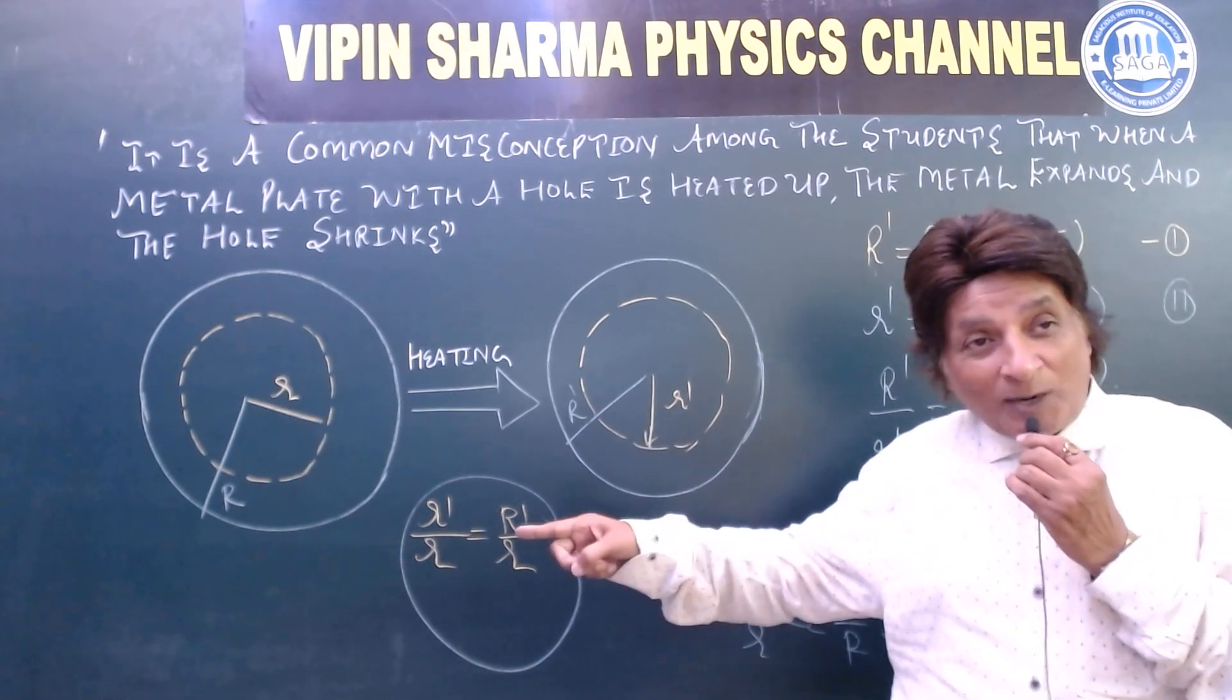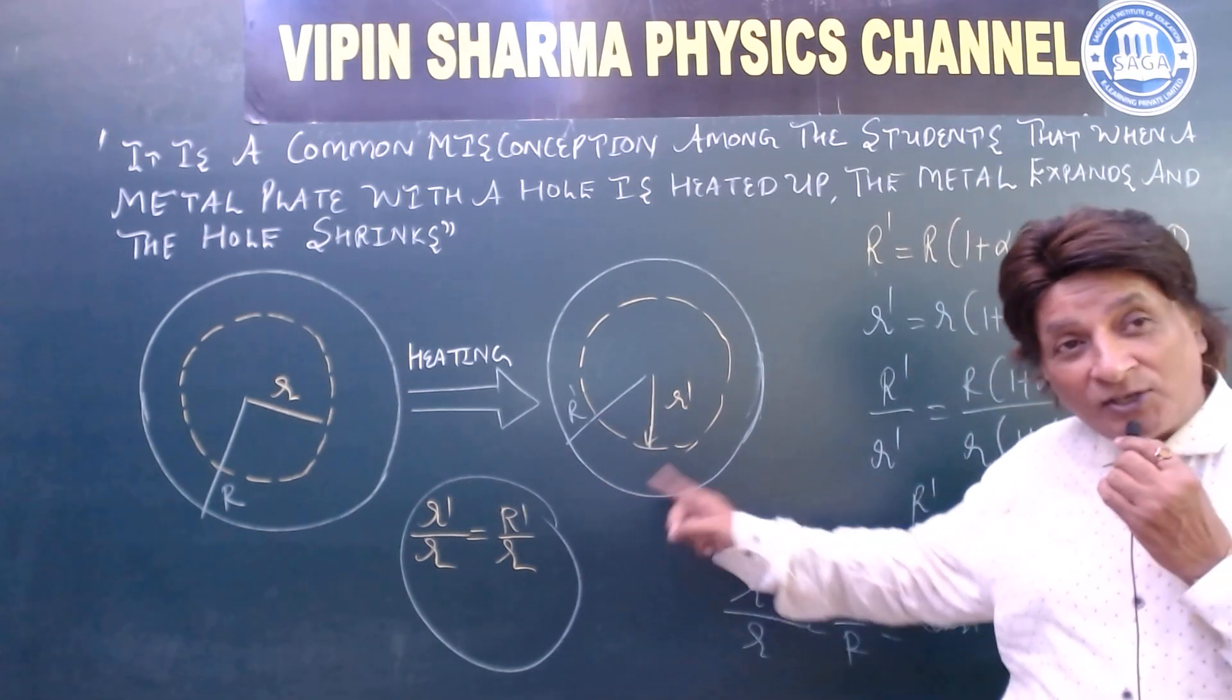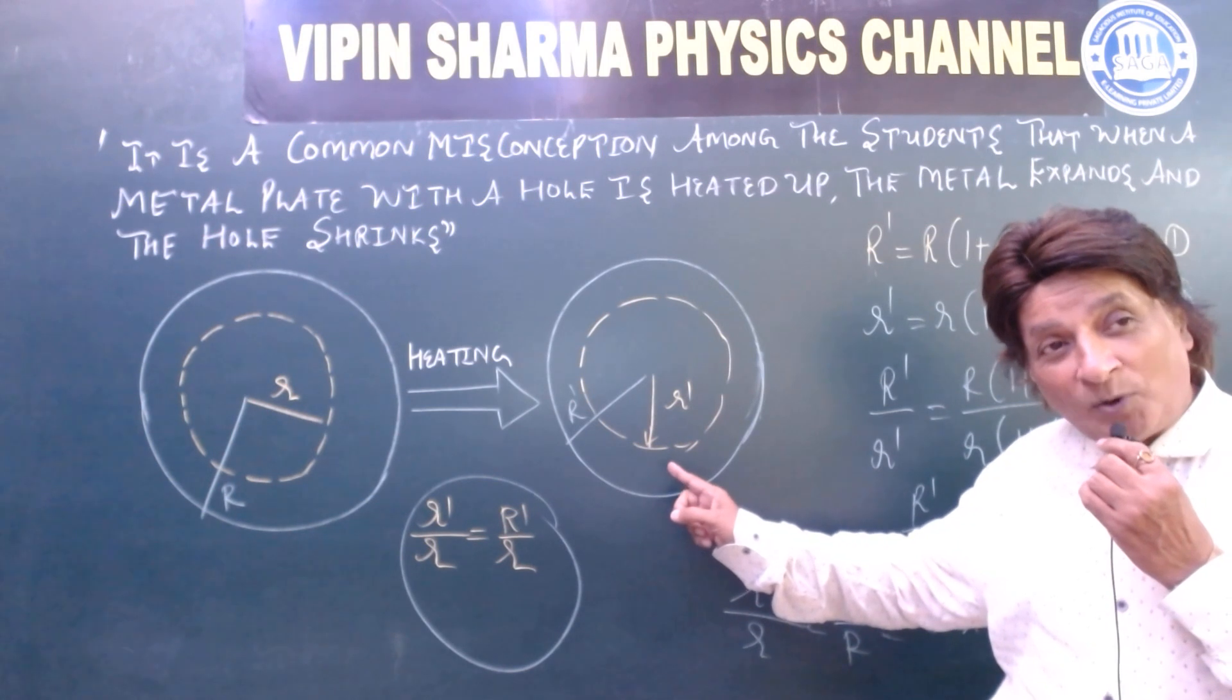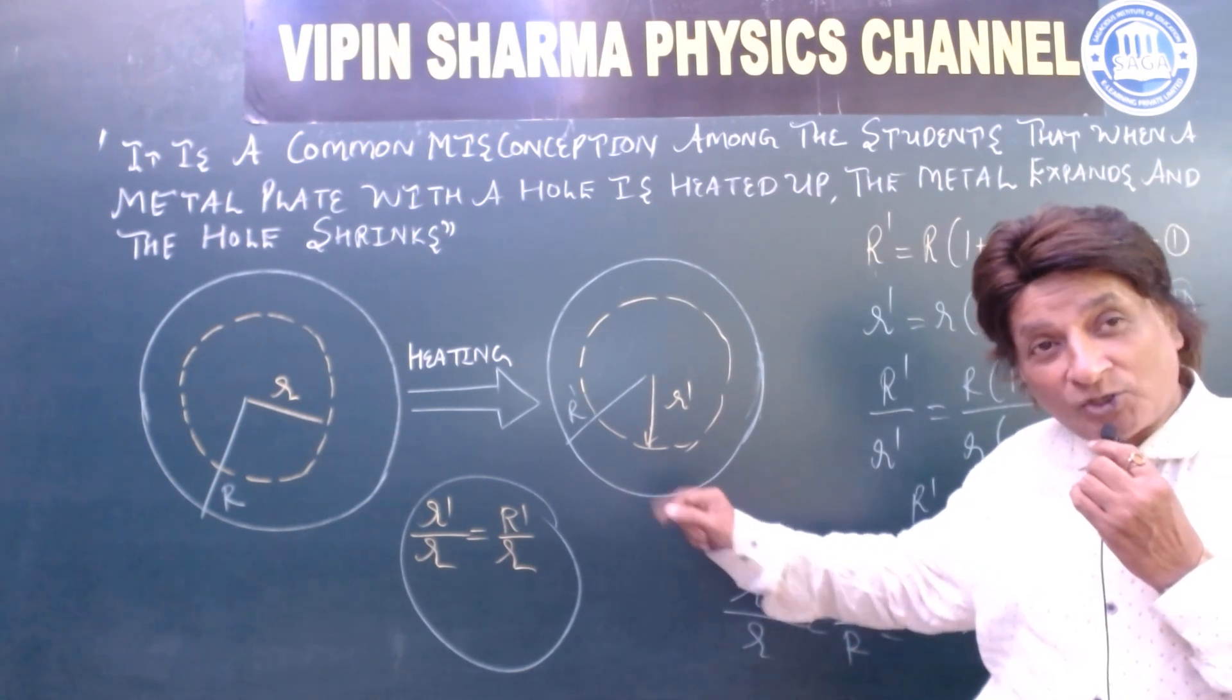Now, we heat the metal plate. The radius is R' and the radius of the inner hole is small r'. Now, see, we use the concept l = l₀(1 + α∆T).